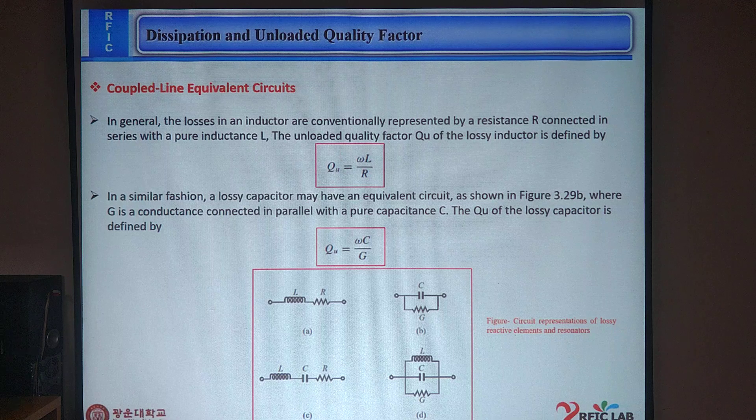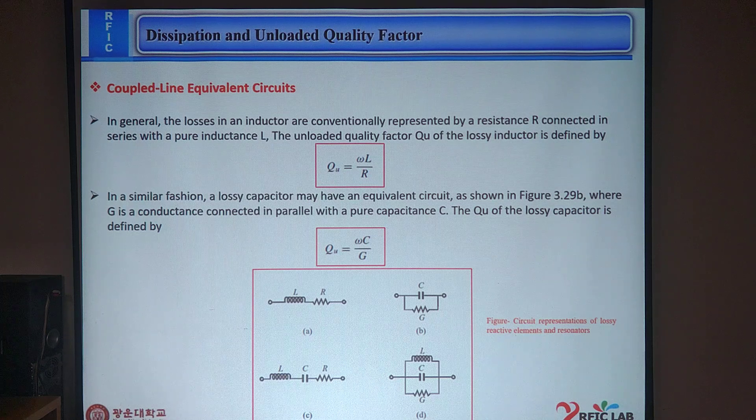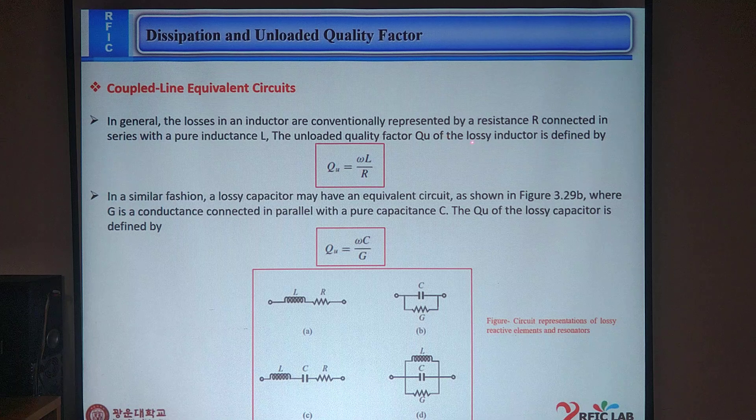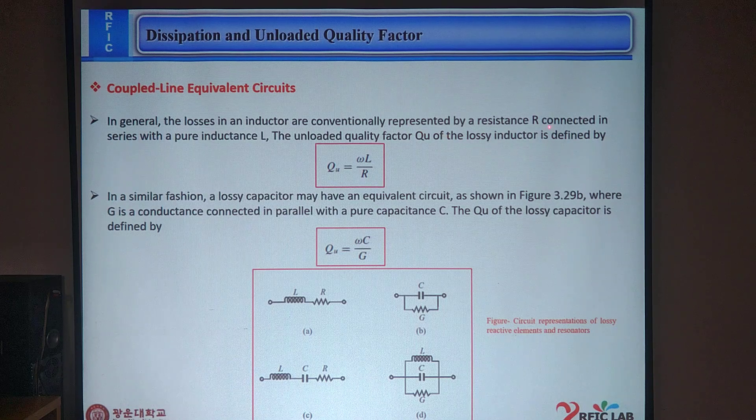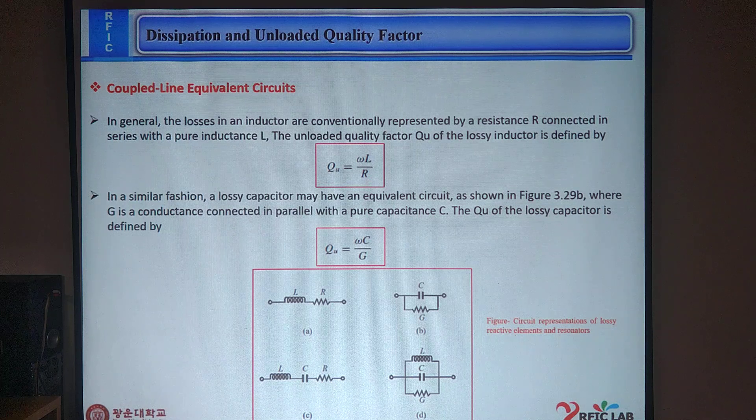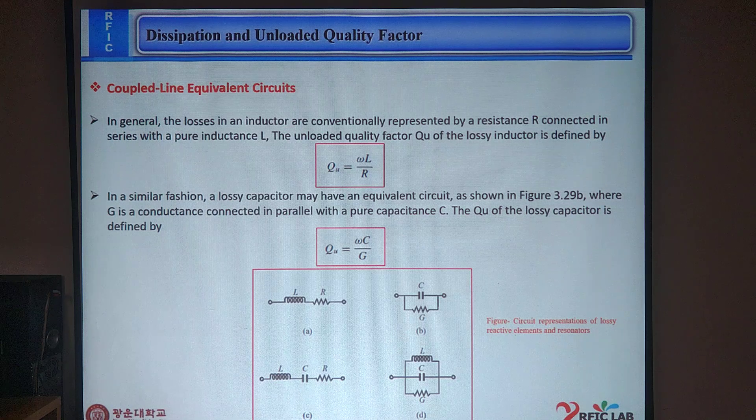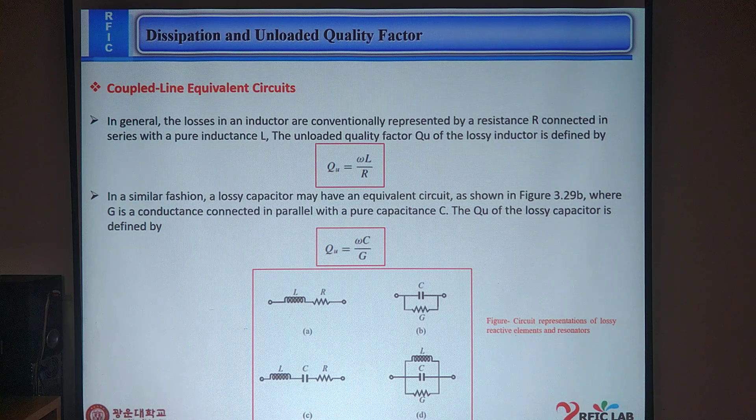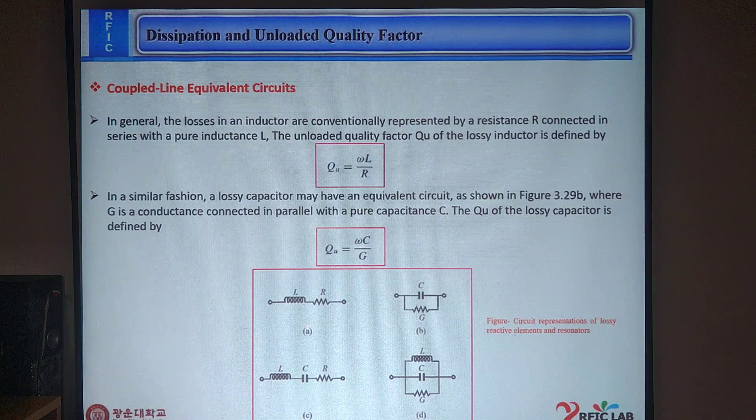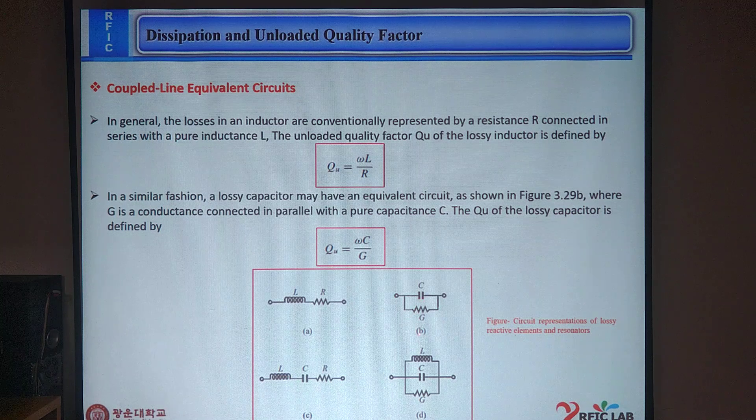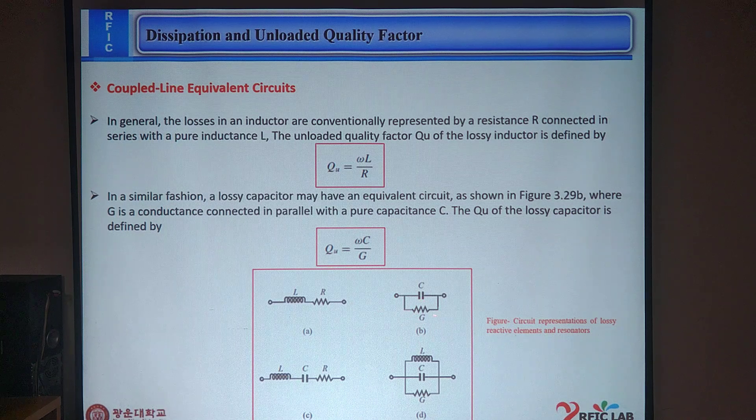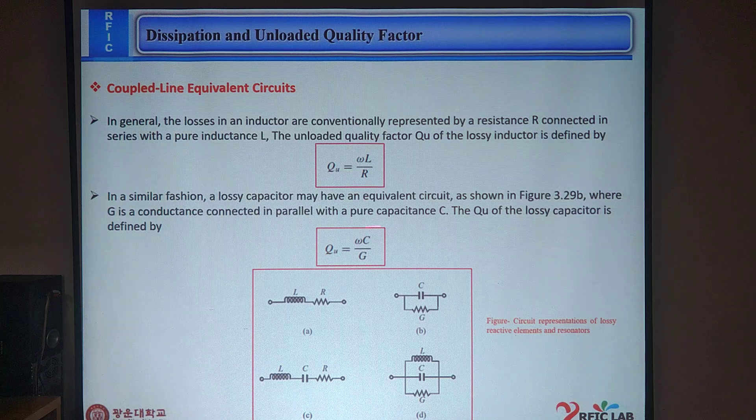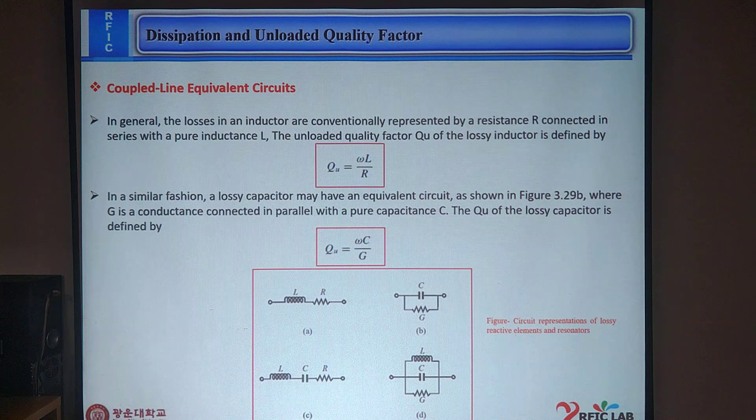Coupled line equivalent circuit. In general, the losses of an inductor are conventionally represented by a resistance R connected in series with a pure inductance L. The loaded quality factor of the lossy inductor is defined by Q = ωL/R. In a similar fashion, the lossy capacitor may have the equivalent circuit as shown in this figure, where G is a conductance connected in parallel with a pure capacitance. Here you can see this is an LCR circuit, this is LR circuit, and G's conductance. Q of the lossy capacitor is defined by this formula: Q = ωC/G. This is a circuit representation of lossy reactive elements and resonators.